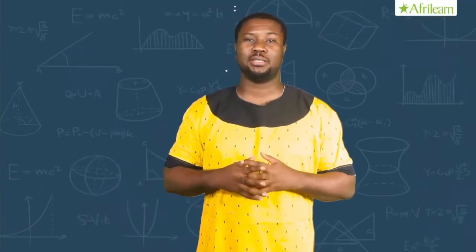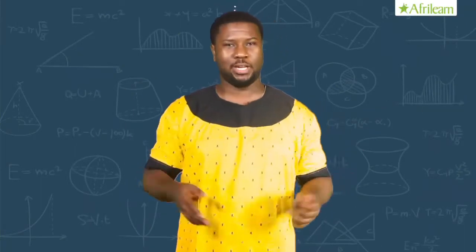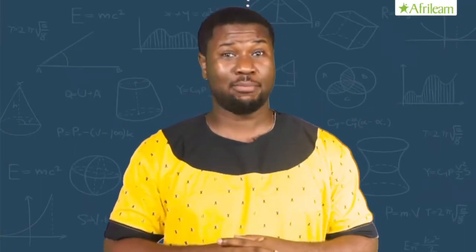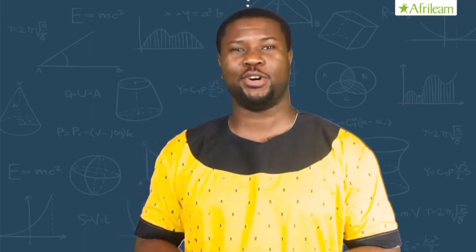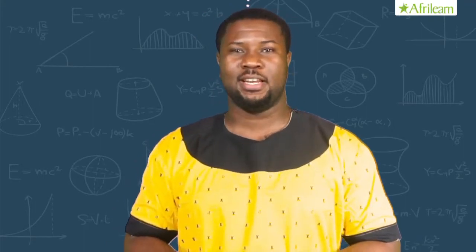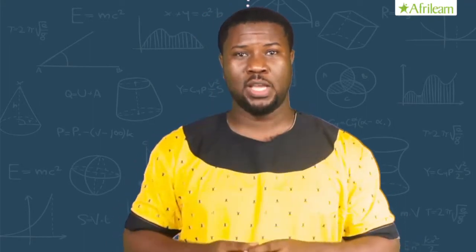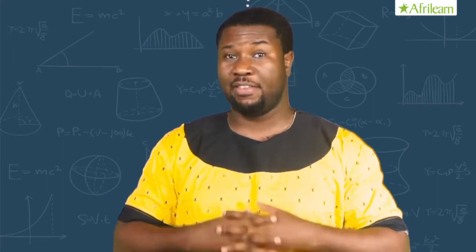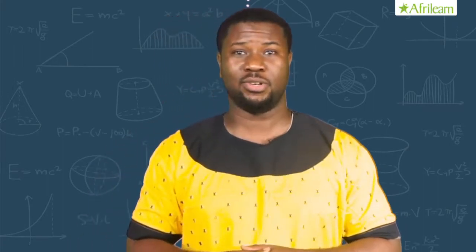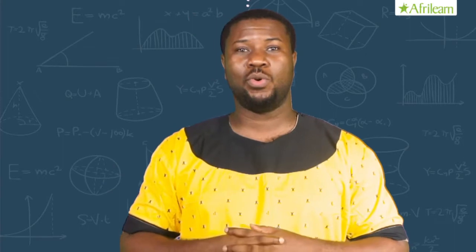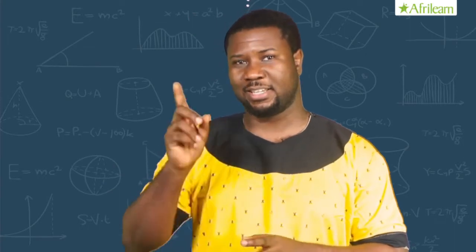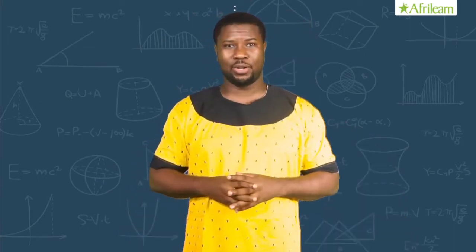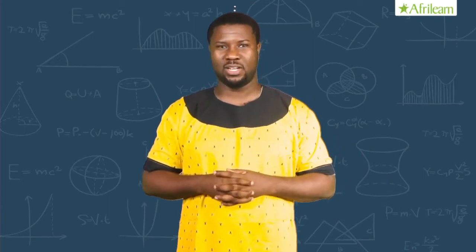Consider a bus filled with X people in it. If there are 40 persons on that bus, that means X is 40. The operation 'equal to' is not a symbol of inequality. If there are less than 30 persons on the bus, then we'll have it as X is less than 30. The less than symbol is a symbol of inequality.